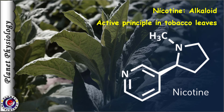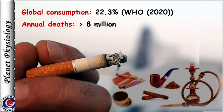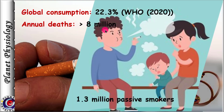Nicotine is a naturally occurring alkaloid found in tobacco. According to WHO data, approximately 22% of the global population consumes tobacco in some form. Tobacco use is responsible for over 8 million deaths annually, including 1.3 million non-smokers who suffer due to passive smoke exposure.